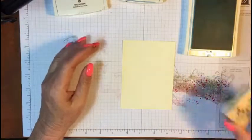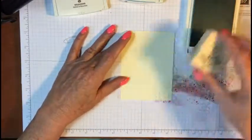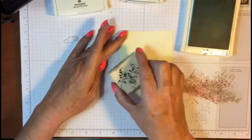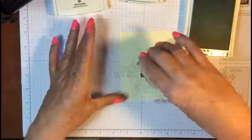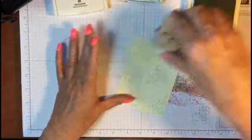First thing we're gonna do is stamp those filigrees. This is kind of a shabby chic version. We're just gonna stamp off to make sure it's not gonna be too dark.